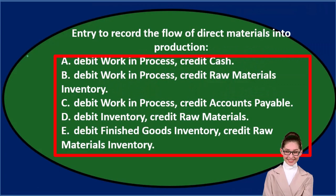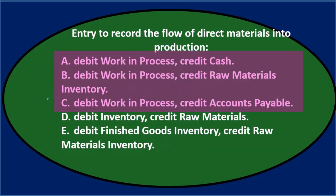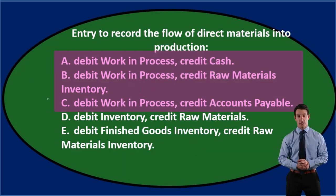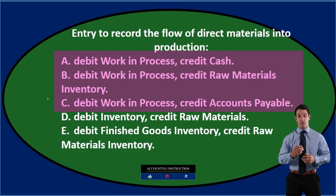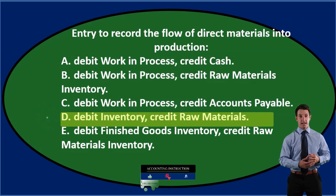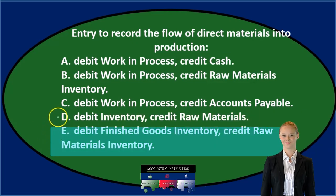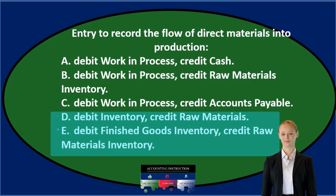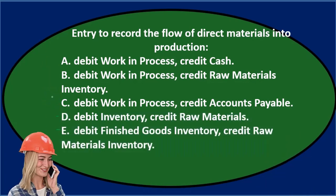The first three answers are all debiting work in process — they're all the same. So we would think that's probably a piece of the answer. D says it's a debit to inventory, and E says a debit to finished goods inventory. So those aren't similar even amongst themselves. Just by that, we can basically say it's probably going to be A through C.